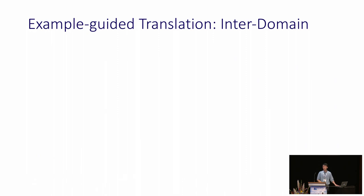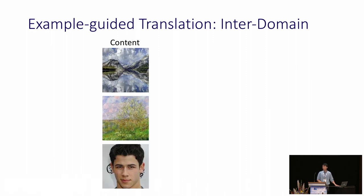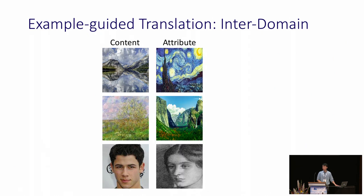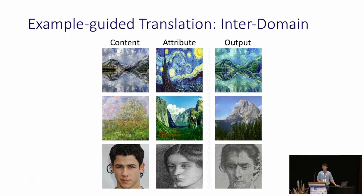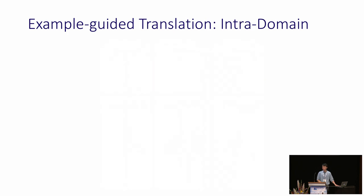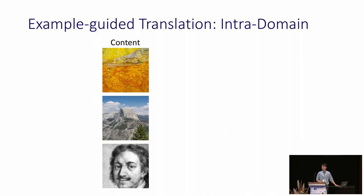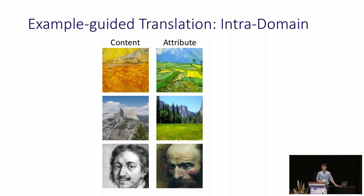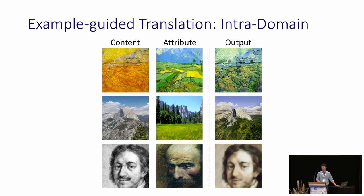We can perform example-guided translations. One domain provides the content, and the other provides the attribute. The translated result will contain the desired attribute. Since the content space is shared, we can even perform the translation within the same domain, where one image provides content and another provides attribute from the same domain. Note that we do not include these translations during training.